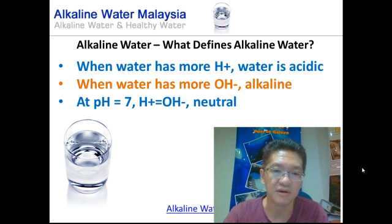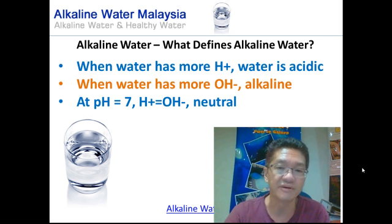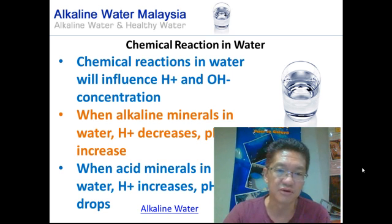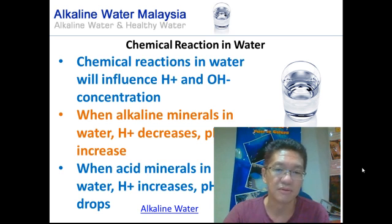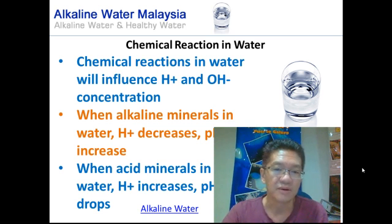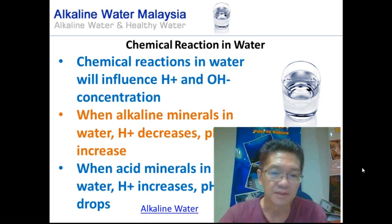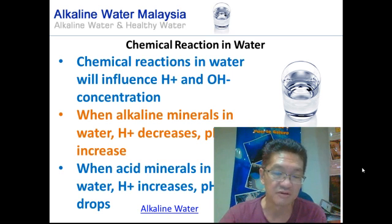At pH 7, the concentrations of hydrogen ions and hydroxyl ions are equal, and that water is considered neutral. The chemical reactions in water will influence the concentrations of hydrogen and hydroxyl ions — reactions can drive either hydrogen ions or hydroxyl ion concentrations higher. When alkaline minerals are present in water, the concentrations of hydrogen ions (H+) decrease, and therefore the pH will increase, meaning the water will be more alkaline. When acid minerals are present in water, the concentrations of hydrogen ions will increase, and therefore the pH will drop.